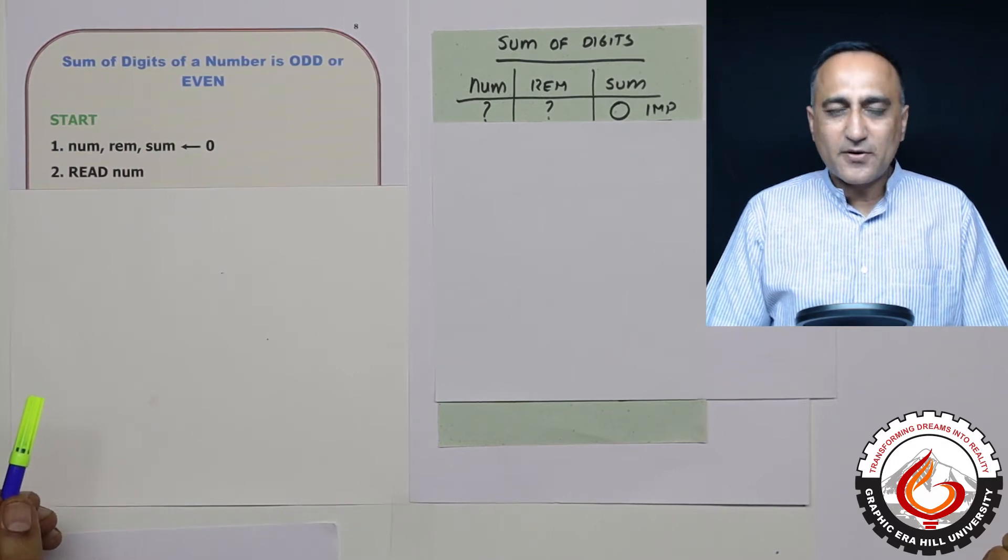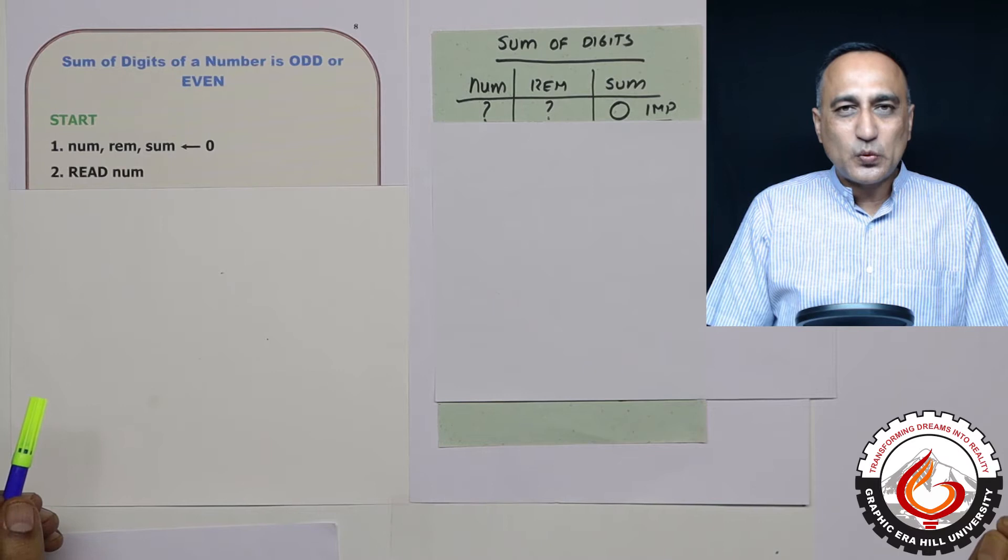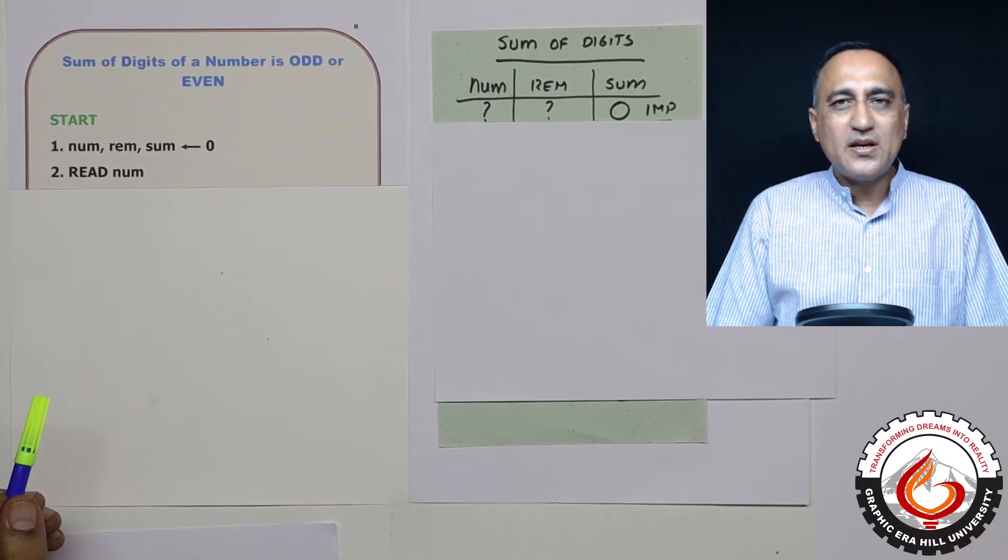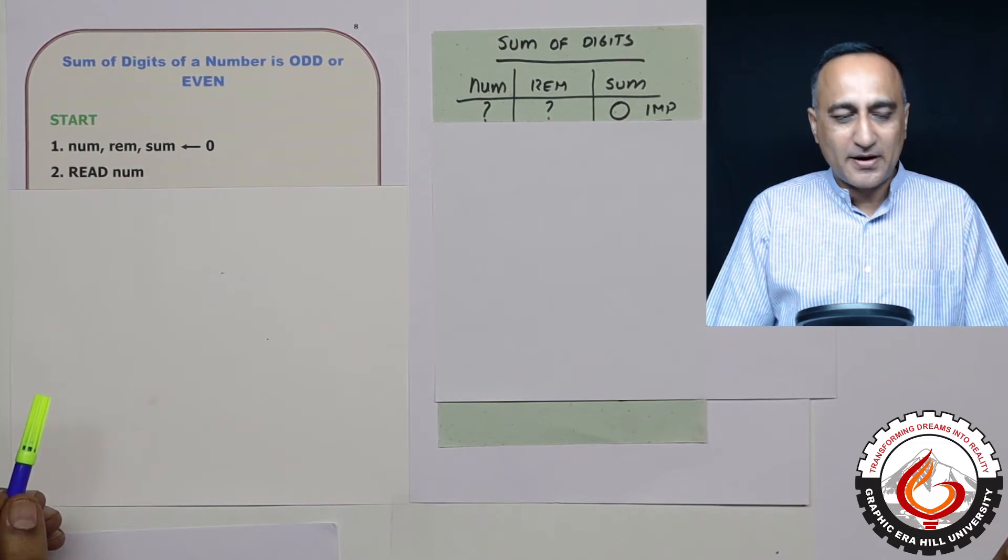So let's say for example the input number is 123. So 1 plus 2 is 3, 3 plus 3 is 6. Now 6 happens to be an even number. So that's what this program is expecting you to find out.